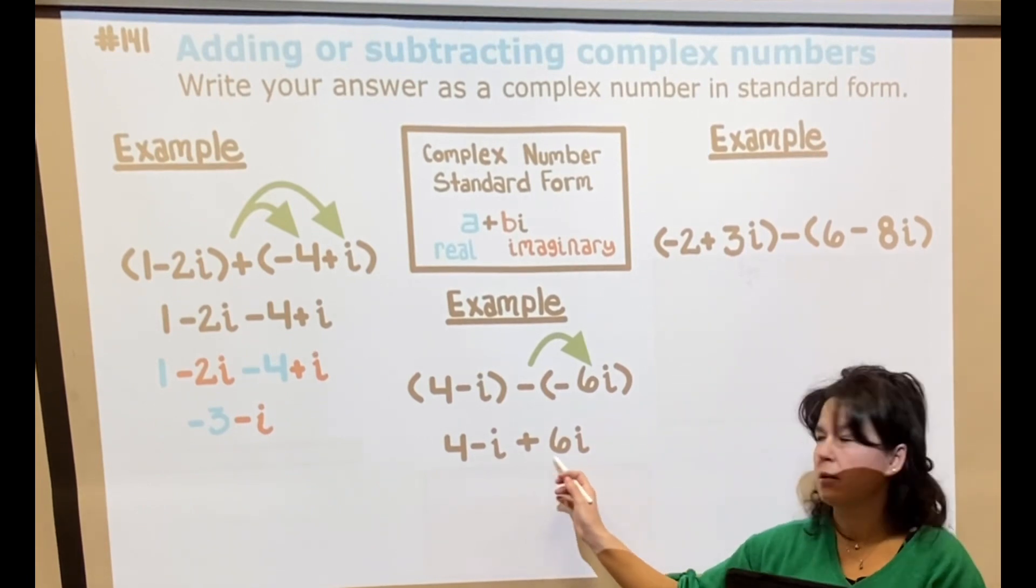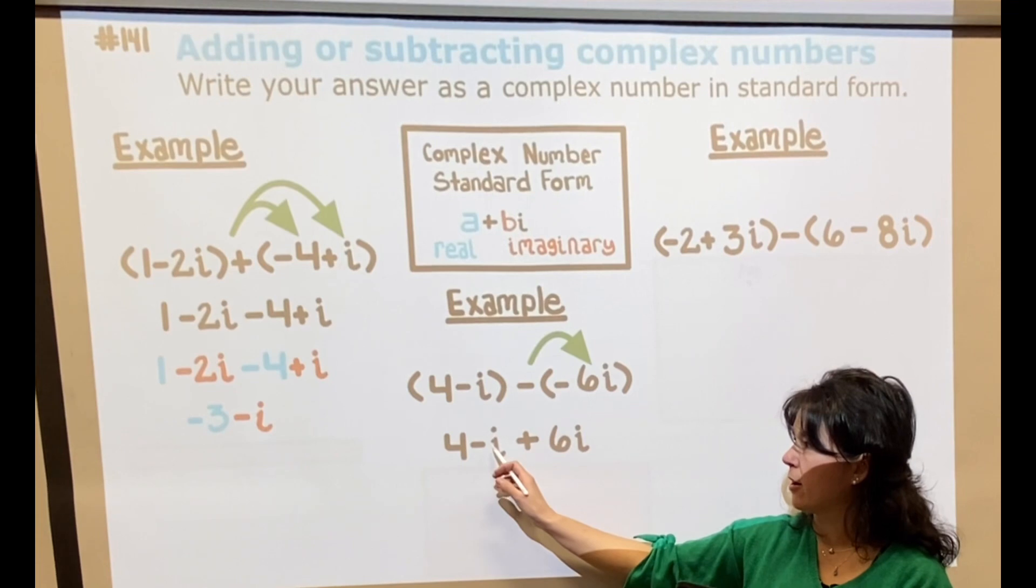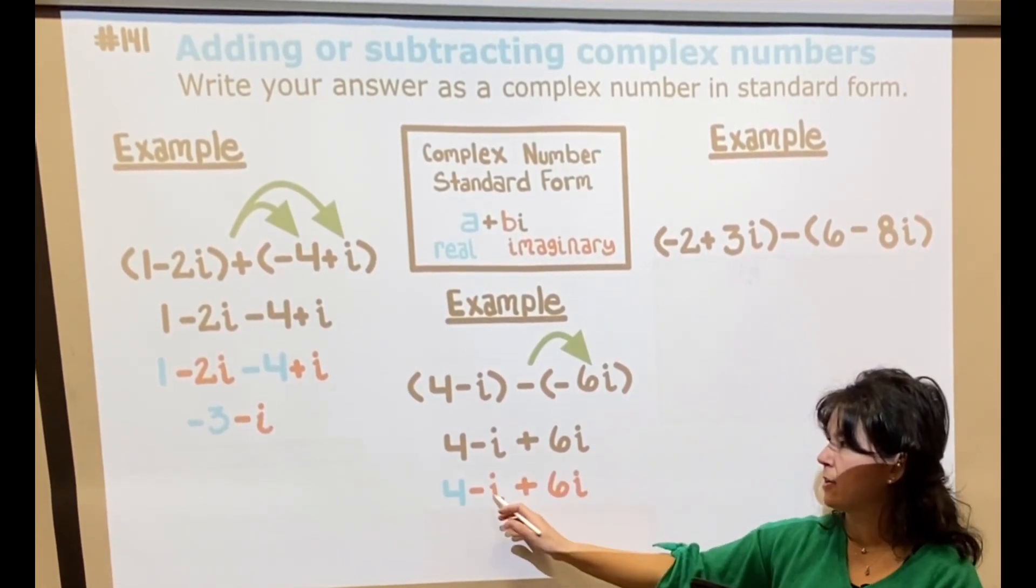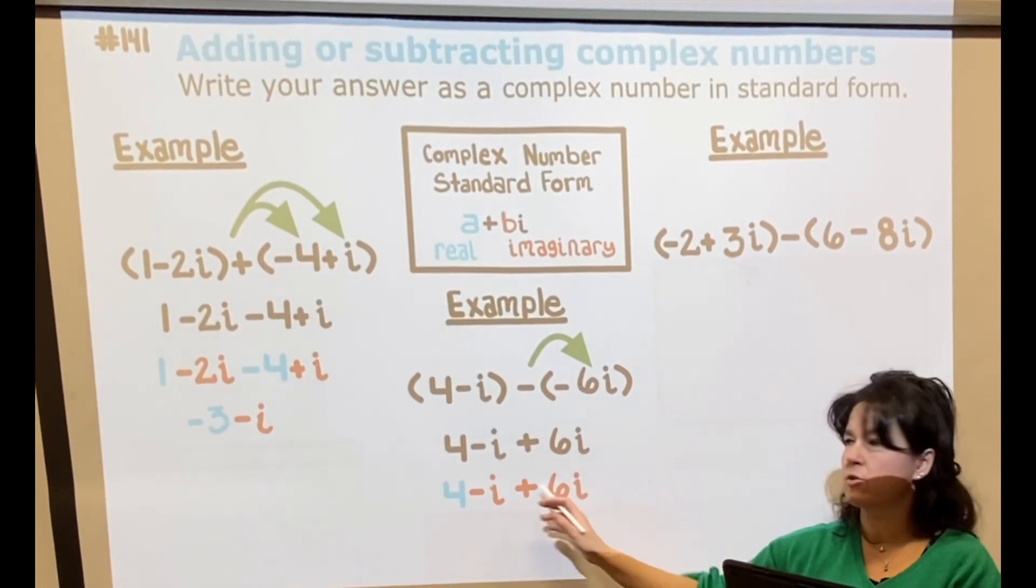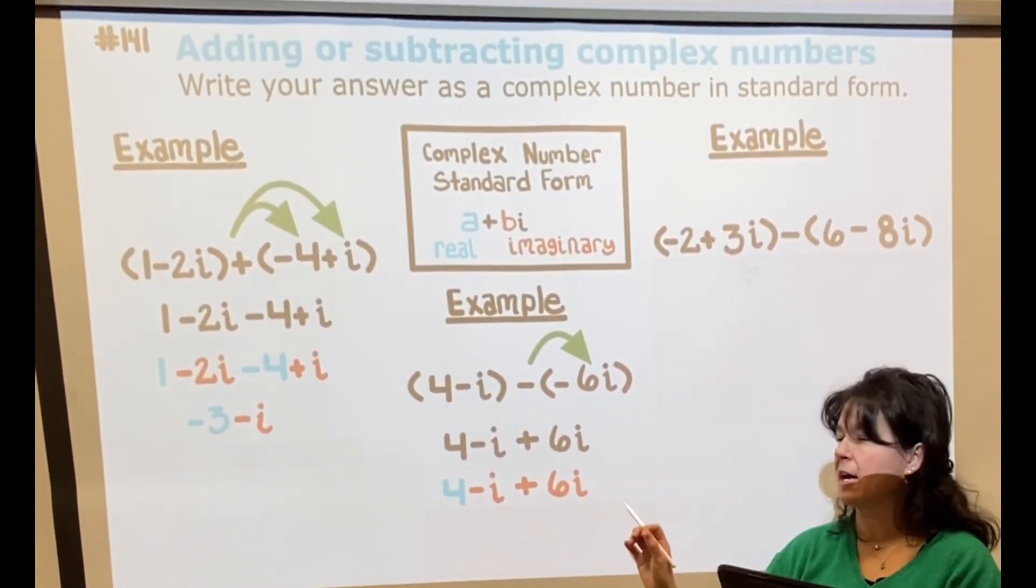Now looking for what is alike. So the 4 is the only number up there, and then negative i and plus 6i, those are alike. Just color-coding that, so these are the ones that can go together. So negative i plus 6i is 5i.